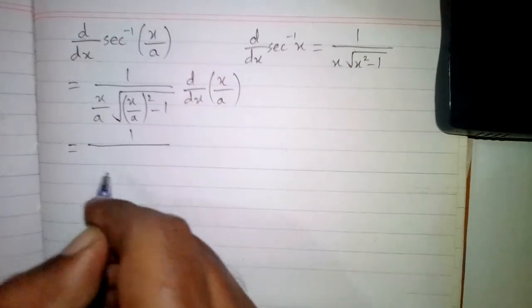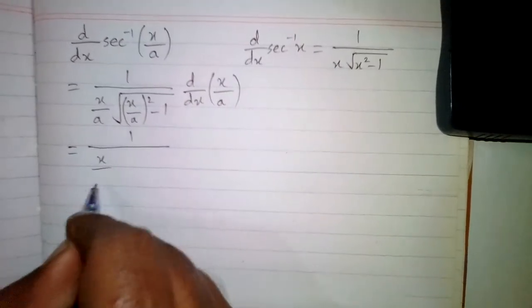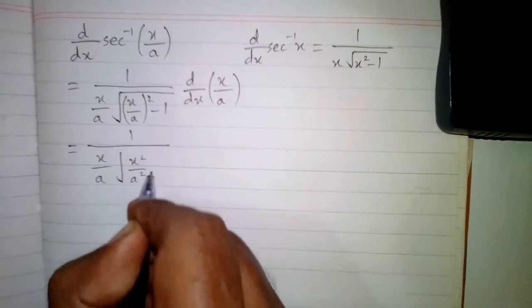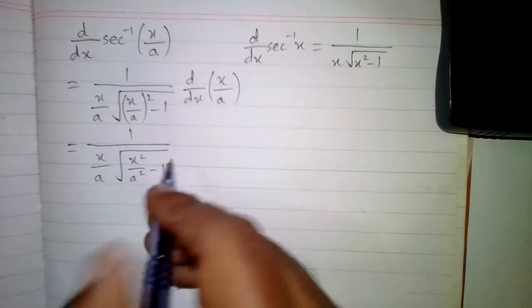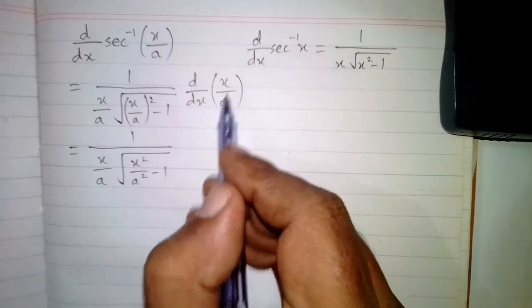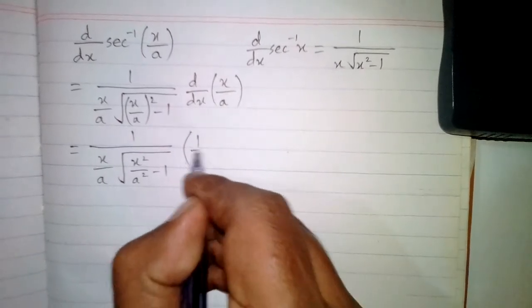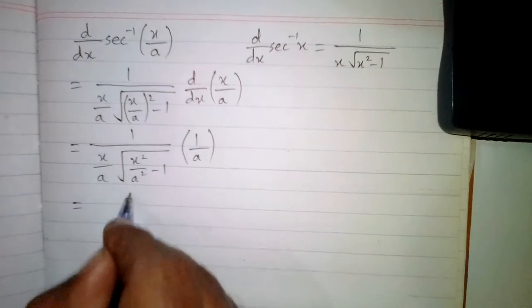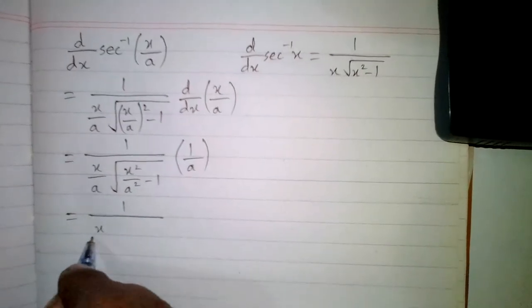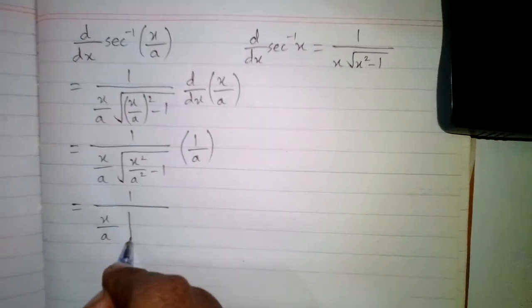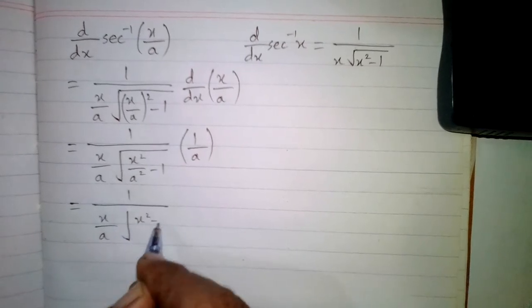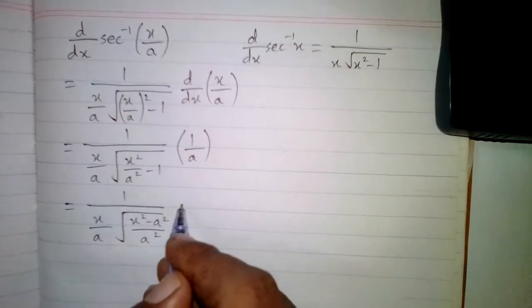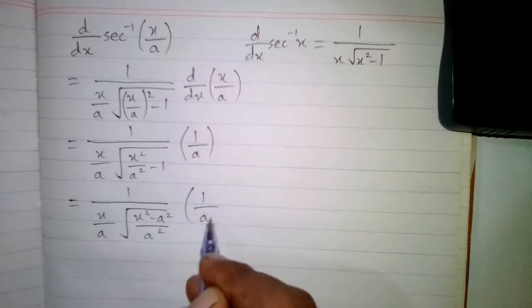Now we can write this as 1 upon (x/a) times the square root of x squared upon a squared minus 1. The derivative of x upon a is 1 upon a. Then we have 1 upon (x/a) times square root of x squared minus a squared upon a squared, multiplied by 1 upon a.